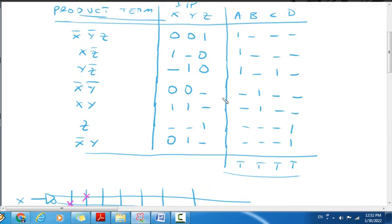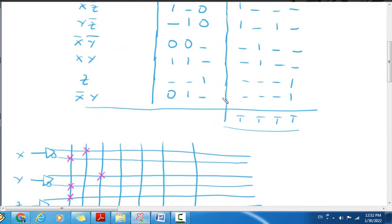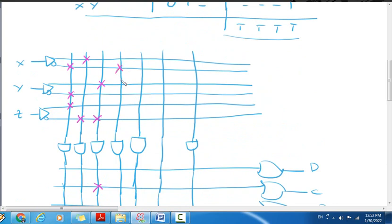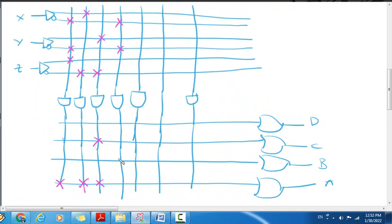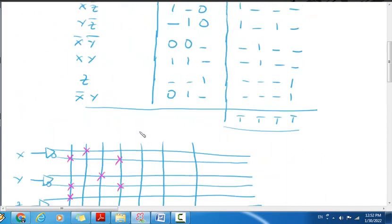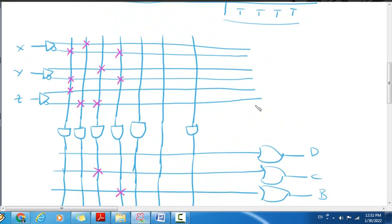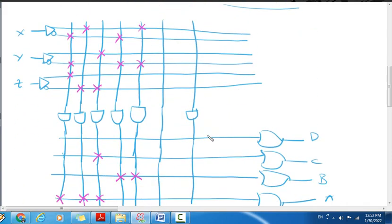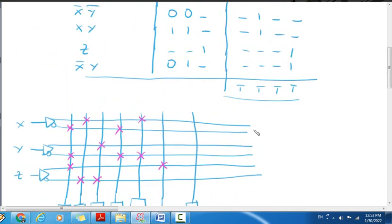We continue with X bar Y bar connections, then XY connections for 1, 1, dash. For dash, dash, 1 we connect Z to the appropriate output.